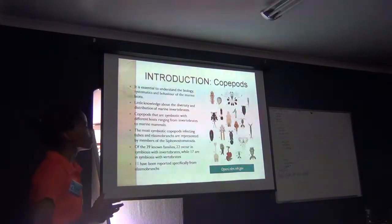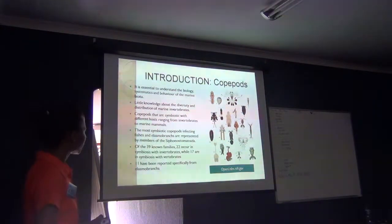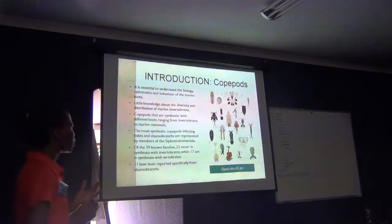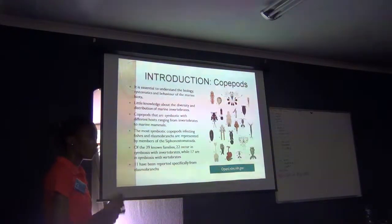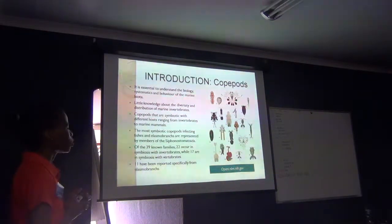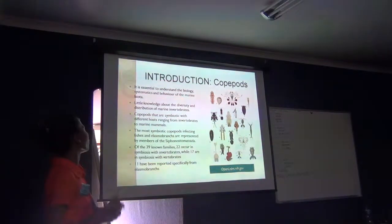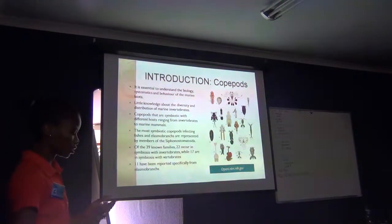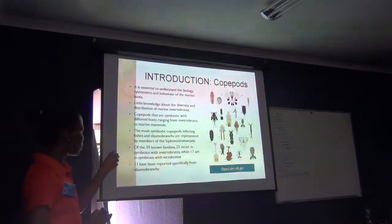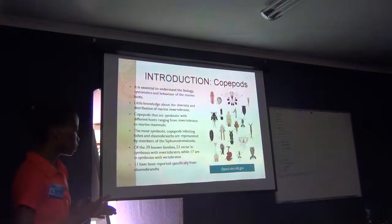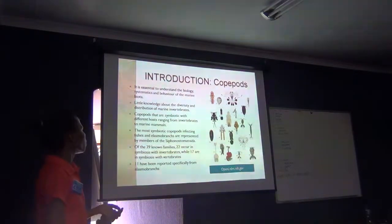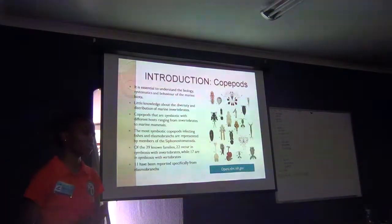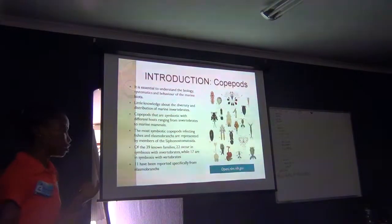We all know that in order to conserve our marine biodiversity, it's very easy to understand the biology, systematics, and behaviour of the marine biota. There's very little knowledge, especially in South Africa, about the diversity and distribution of marine invertebrates — especially the copepods that are symbiotic with different hosts, ranging from invertebrates to marine mammals. The most symbiotic copepods are found in the order Syphonostomatoida. In this order we have 39 known families. Of those, 22 occur in symbiosis with invertebrates, while 17 occur in symbiosis with vertebrates, and 11 out of those 17 have been reported from elasmobranchs.